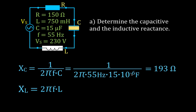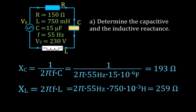For the inductor we use the equation two pi times f times L. With 55 hertz and 750 millihenry (10 to the minus three), we multiply those values together and get an inductive reactance of 259 ohms.